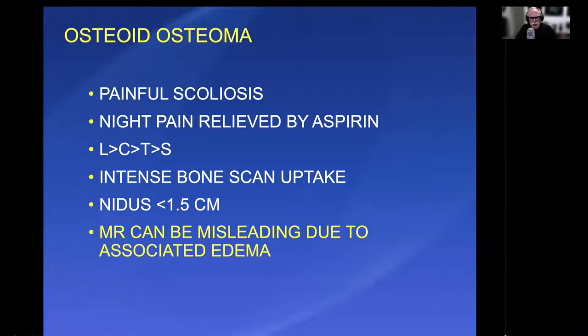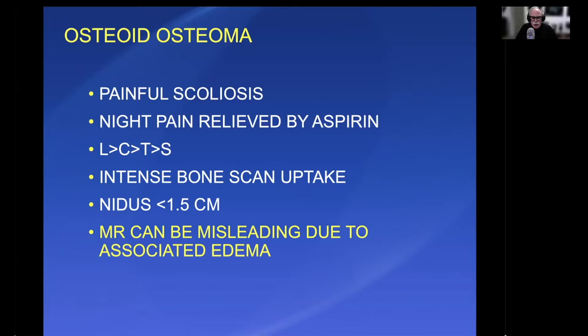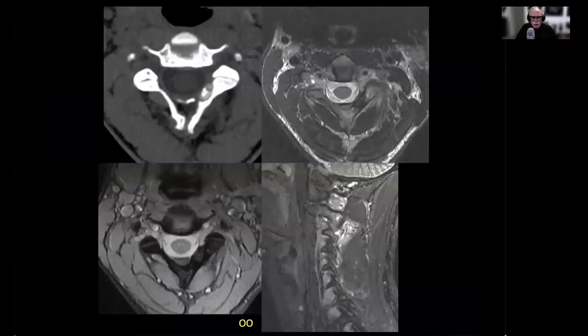Next is osteoid osteoma. This is a well-known lesion and a cause of painful scoliosis in the spine. The classic presentation is night pain that's relieved by aspirin. The lumbar spine tends to be most common, with cervical coming next. A bone scan can show intense uptake. By definition, osteoid osteoma has a nidus of less than one and a half centimeters. These lesions can be associated with surrounding inflammation and edema within the adjacent soft tissue and bone, so on MR alone you can be overestimating how aggressive the lesion is — you have to be careful with that.